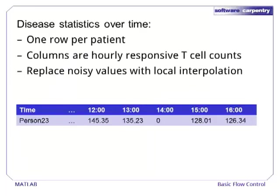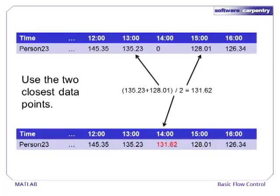To introduce loops, we will use a running example from statistics. Suppose we are given a matrix of disease statistics. Each row is a patient and we have their T-cell counts at each hour. Unfortunately, the T-cell count is missing for some time points. Those points are marked with a zero and we need to decide what to do with the missing data. One of the simplest ways to interpolate missing data is to replace it with the average of the two closest data points.